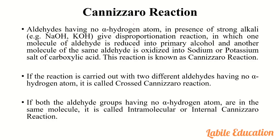Today we are going to discuss the Cannizzaro reaction. Aldehydes having no alpha hydrogen atom, in the presence of a strong alkali such as NaOH or KOH, give a disproportionation reaction in which one molecule of aldehyde is reduced into a primary alcohol and another molecule of the same aldehyde is oxidized into the sodium or potassium salt of carboxylic acid. This reaction is known as the Cannizzaro reaction.